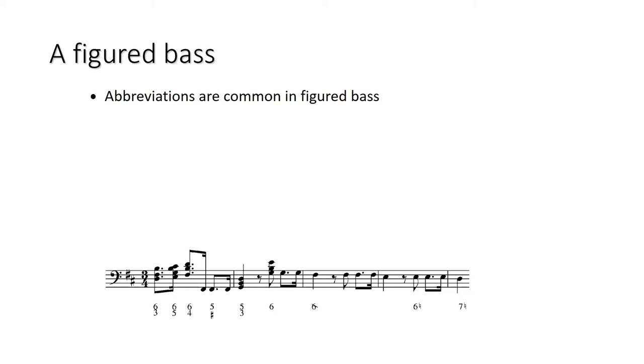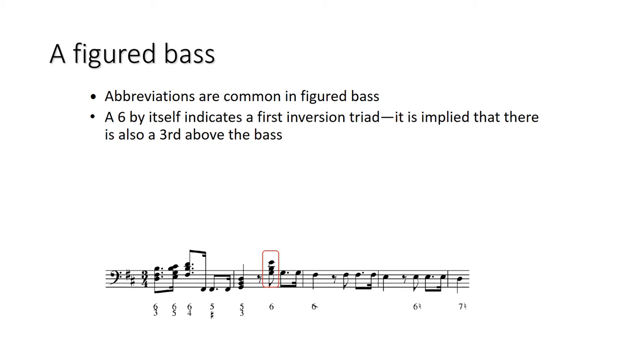But there's, again, abbreviations, like we use in our inversion symbols now. If you just have a sixth by itself, that indicates a first inversion triad as well, and it's implied that there's also a third. So if there's not a number there, it's probably three.